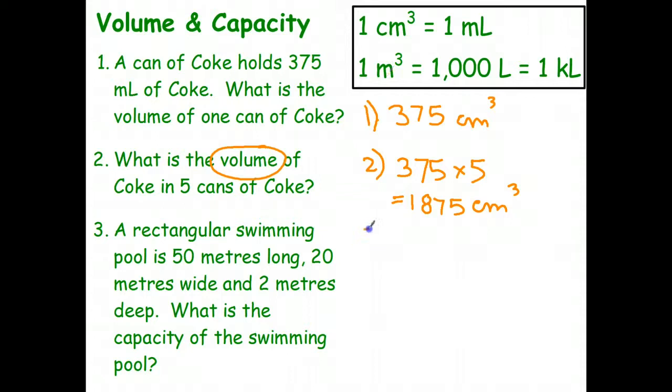Let's look at the last question. A rectangular swimming pool is 50 meters long, 20 meters wide, and 2 meters deep. What is the capacity of the swimming pool? We want to answer either in liters or, if it's big enough, kiloliters. We start by writing our volume formula: area of the base times the height. The base in this case is just a rectangle.